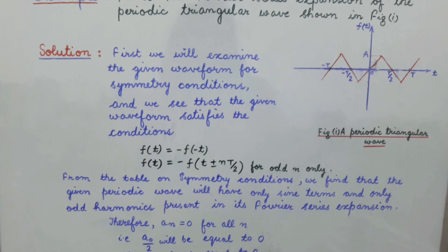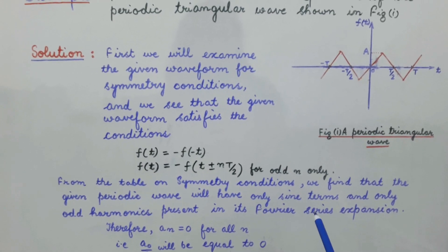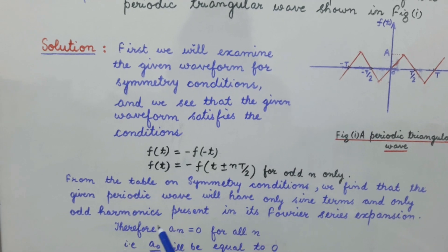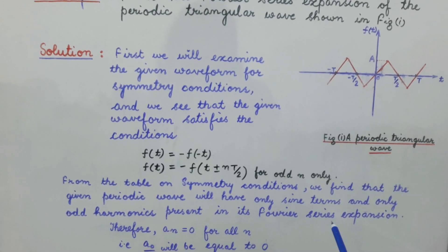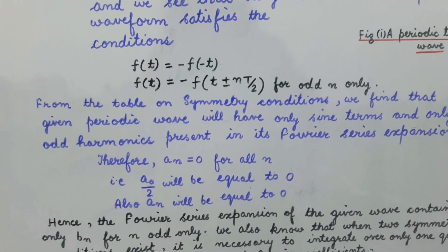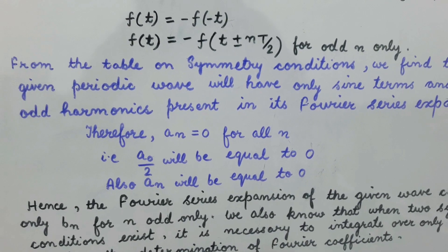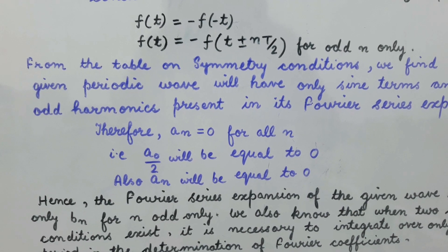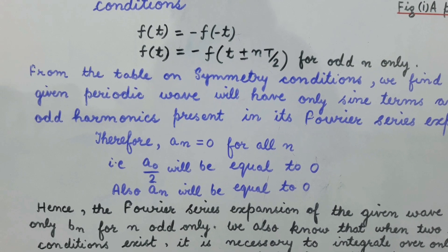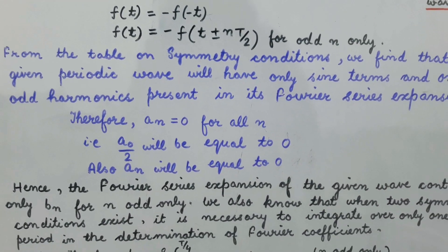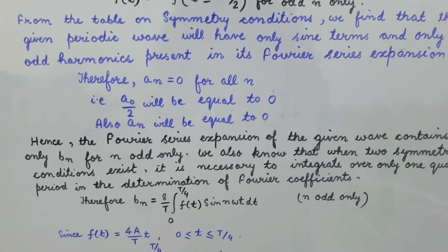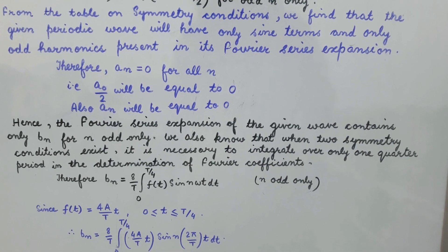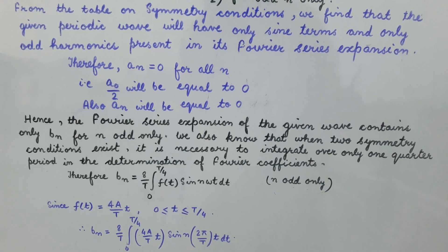From the table of symmetry conditions discussed in the previous class, we find that this given periodic wave will contain only sine terms, and it will have only odd harmonics present in its Fourier series expansion. That is, the value of a_n will be equal to 0, and the value of a_0/2 will also be equal to 0, because these are the characteristic properties of a wave which satisfies both these conditions.